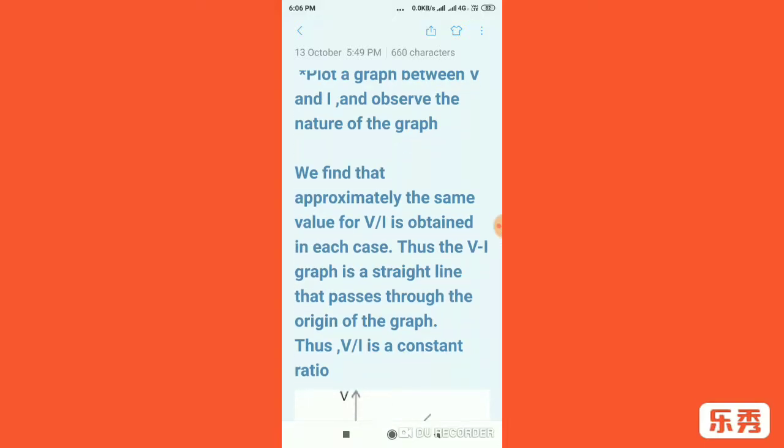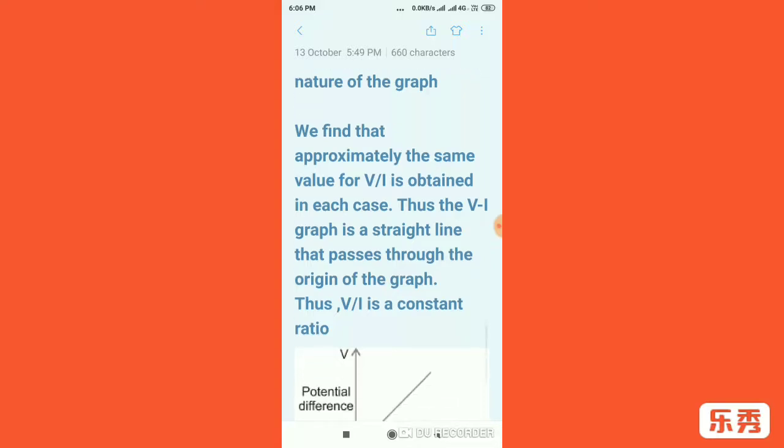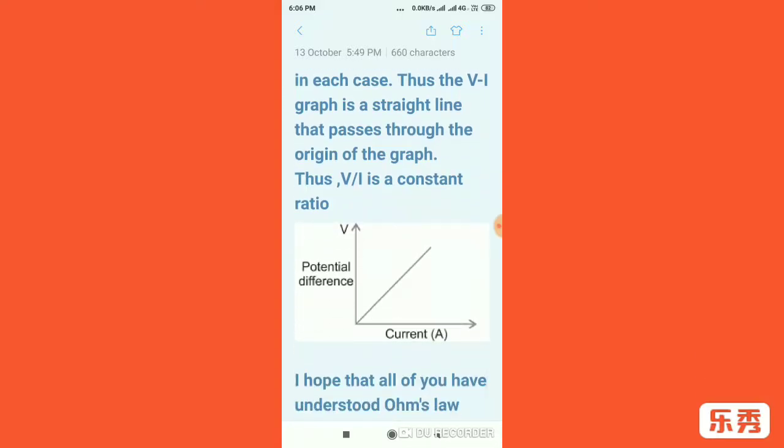Therefore, the V by I graph is a straight line that passes through the origin of the graph. That's what I mentioned before, that the line will pass through the graph. Thus V by I is a constant ratio.